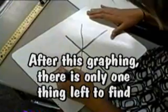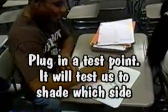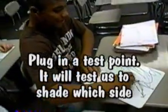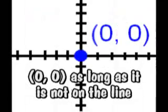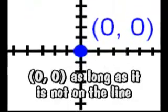After this graphing, there is only one thing left to find. Plug in a test point, it will tell us to shade which side. I was thinking of ways to know which test point is fine. Zero, zero, as long as it is not on the line.